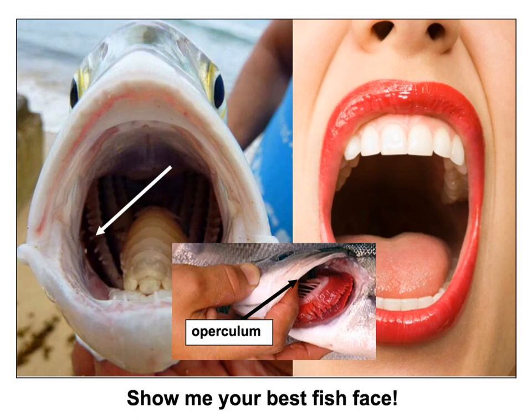Hello everybody. In this video I want to talk through the gill structure in a fish. It's part of a unit of work that you study at A-level on gas exchange in organisms. The fish is really quite unique — it's a fascinating organism to study, and it's a fascinating biological process that takes place over the gills.